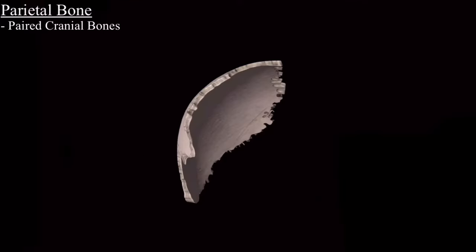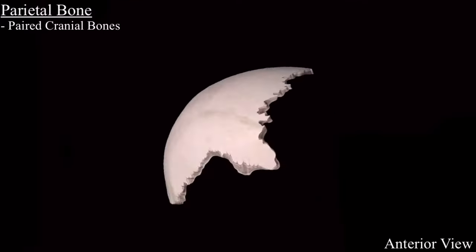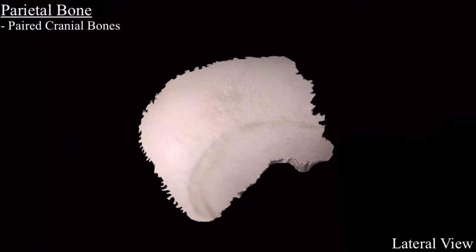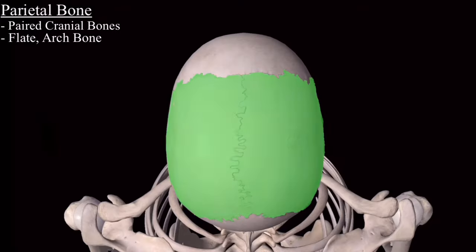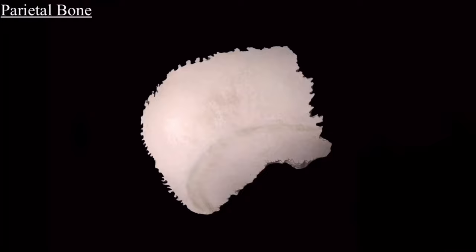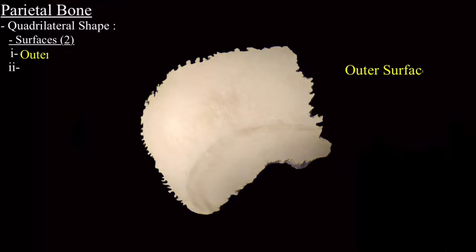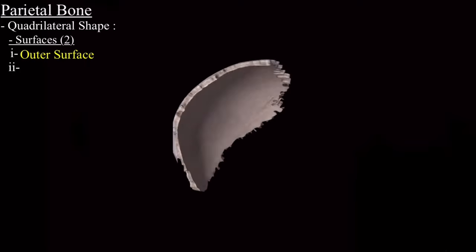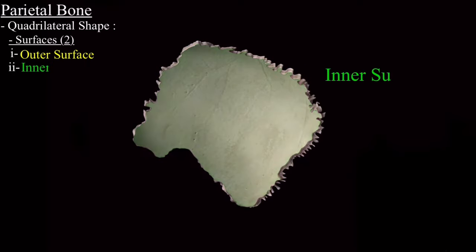This is the isolated parietal bone with the interior view. Now with the lateral view you can see that it is a flat arc bone. Both parietal bones form a major part of the skull covering the brain. Individual parietal bone is quadrilateral in shape. It has two surfaces: the outer surface and the inner surface.